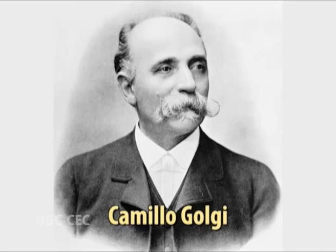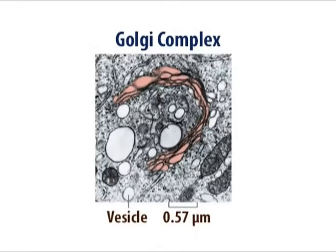The Golgi apparatus is the only cell organelle to be named after a scientist. Its visible characteristics were first reported by Camillo Golgi in 1898, when he named it the internal reticular apparatus. Debate about its existence continued even after 1913, when the term Golgi apparatus was officially adopted. Extensive work using electron microscopy in 1954 finally confirmed the existence of the organelle, cementing the eponym the Golgi.